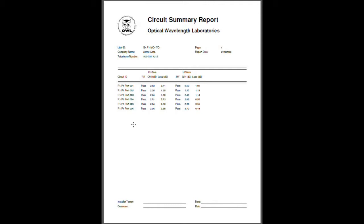Here we see an example of a summary report. Circuit summary view shows basic information about a group of related fiber runs. The information on a summary report is pretty straightforward. At the top of a report we have general information about the link, such as link ID, date of report, and other important information.